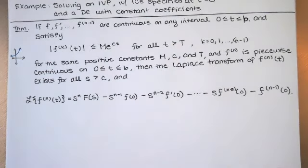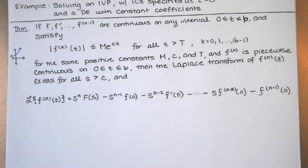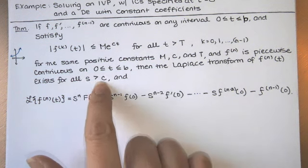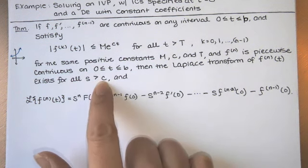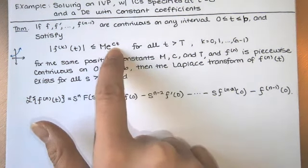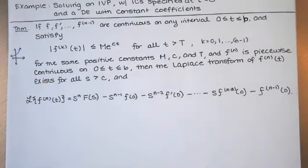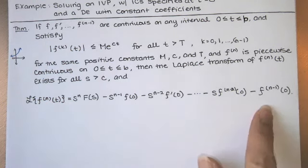If those conditions are true and the nth derivative of f with respect to t is piecewise continuous on the interval from zero to b, then the Laplace transform of the nth derivative of f exists for all s greater than c, where c is the exponential order of all of those functions. In that case, the Laplace transform of the nth derivative is given by this formula.